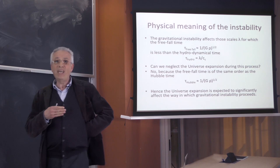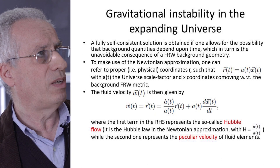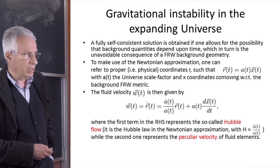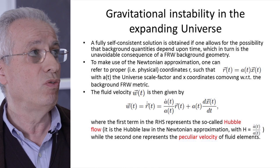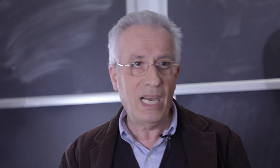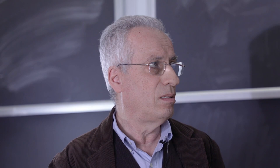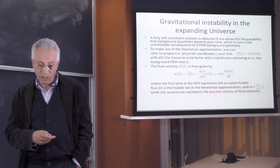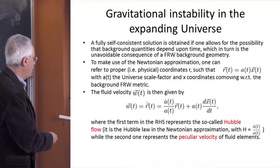Let me try to see how we can deal with the universe's expansion in this context. We choose physical or proper coordinates R, defined as the scale factor of the universe a(t) times the comoving coordinate x(t), which is comoving with respect to the background Friedmann–Robertson–Walker metric. The velocity is R-dot, which equals A-dot times X — that is, H times R — plus A times x-dot. The first term is the Hubble flow; the second term is called the peculiar velocity.